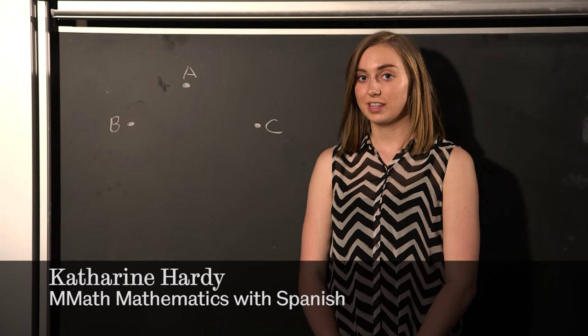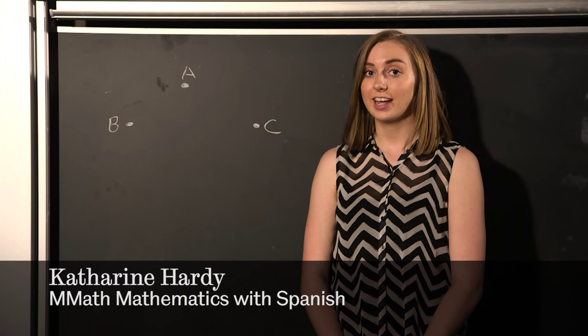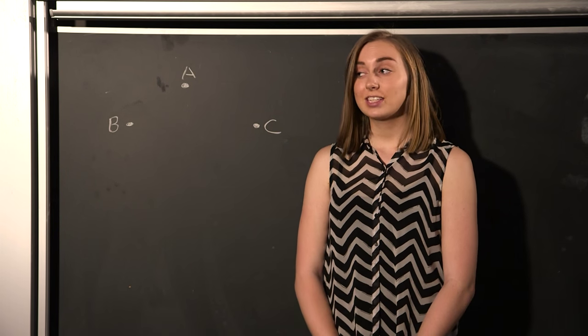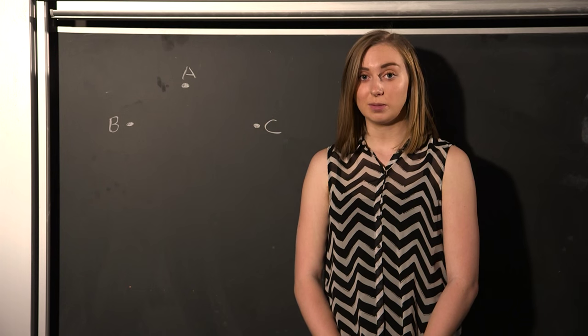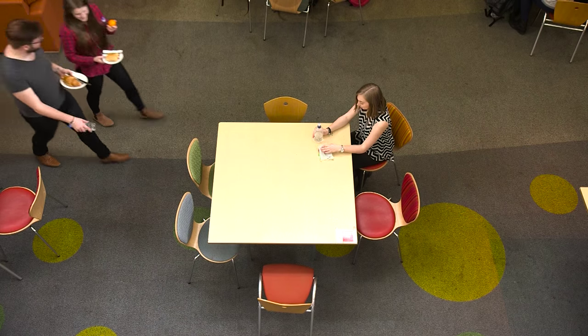I'm doing a project on Ramsey theory which is about finding order and interesting patterns in mathematical objects. This can be demonstrated through something called the party problem. Say we have three people meeting for lunch.